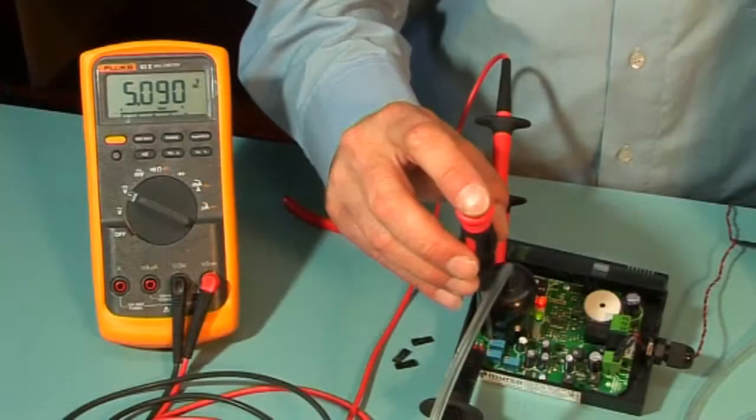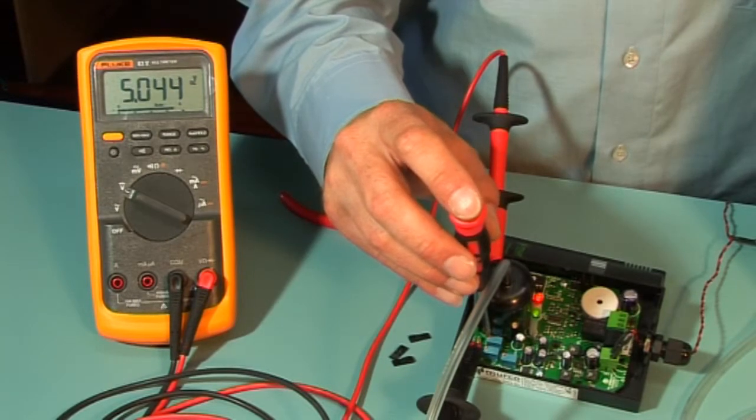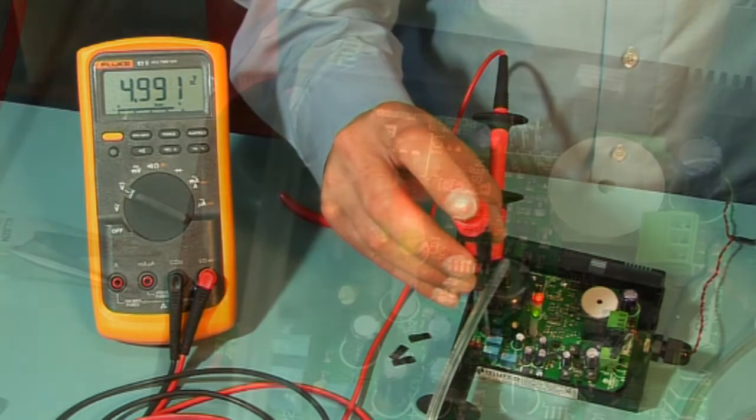You should see the voltage increase. Once the voltage stops climbing and stabilizes, then adjust the voltage to 5 volts using P3.